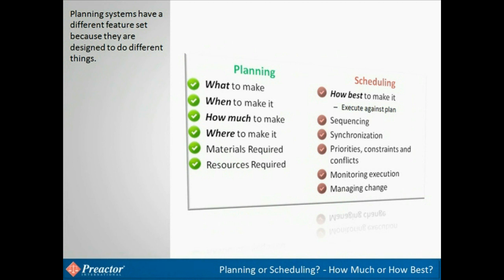Scheduling tools work out how best to make it. It works out the best way to execute the plan. It looks at the best sequence of work on each resource. It works in real time, so it will only load operations based on when all resources required are available, and generates a work-to list for each resource over the whole period of the schedule horizon. It will get feedback on actual times and help to manage the inevitable changes that may be required due to, for example, late arriving materials, breakdowns of machines, and changes in the priorities of orders.